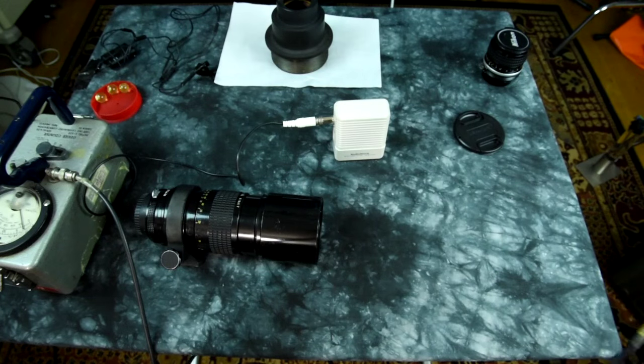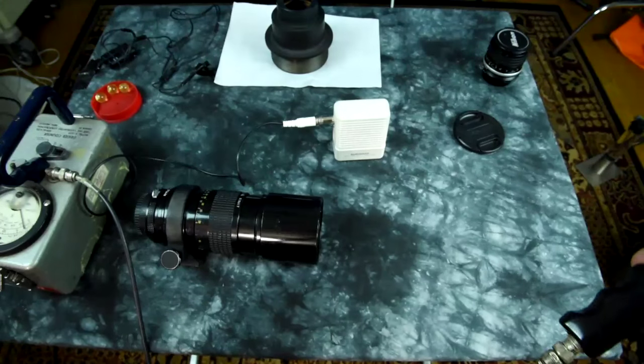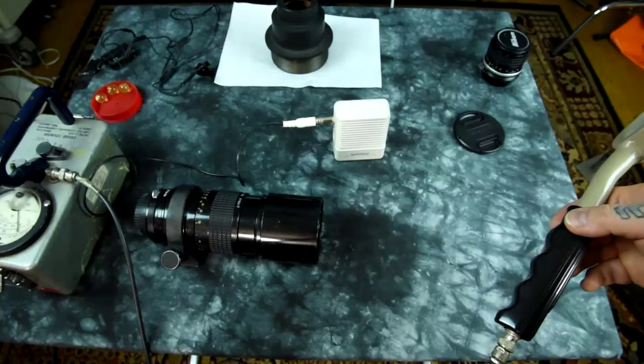Okay, here's another radioactive Nikkor lens. This is the 300mm F4.5.